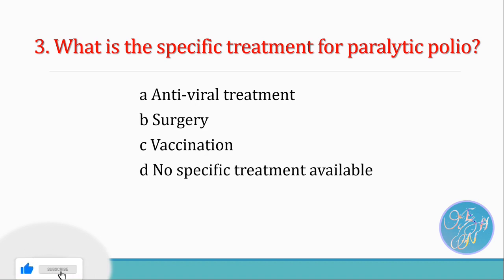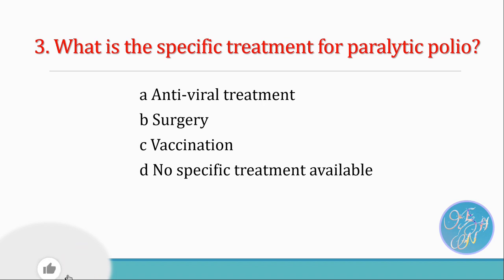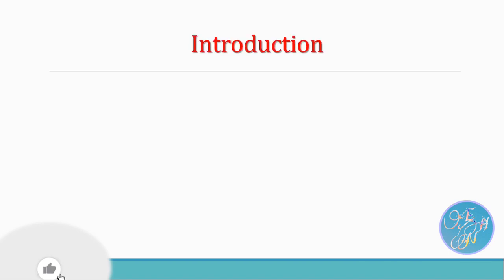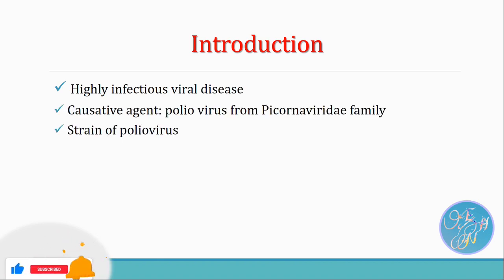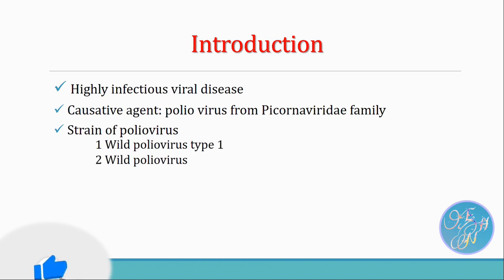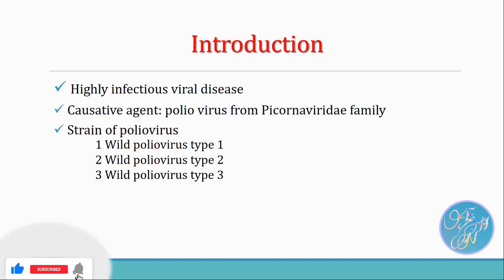Poliomyelitis is a highly infectious viral disease caused by poliovirus from the Picornaviridae family. There are basically 3 strains of poliovirus: Wild Poliovirus Type 1, Wild Poliovirus Type 2, and Wild Poliovirus Type 3. This poliovirus lives in the throat and intestine of the infected person and attacks the nervous system including the spinal cord. Although it can affect a person of any age group, this infection is most common among children under 5 years of age.